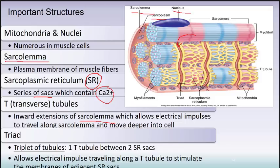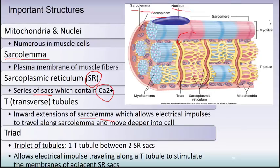The sarcolemma is like the plasma membrane of the muscle cell. The sarcoplasm is like the cytoplasm. The sarcoplasmic reticulum is a series of sacs running through the cell containing calcium required for muscle contraction. T-tubules, also called transverse tubules, are inward extensions of the sarcolemma that allow an electrical impulse to travel deeper into the muscle cell to trigger calcium release. The term triad refers to one T-tubule with a sarcoplasmic reticulum on either side — as the electrical impulse travels down the T-tubule, it stimulates the nearby sarcoplasmic reticulum to release its calcium.